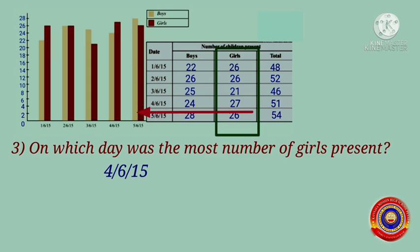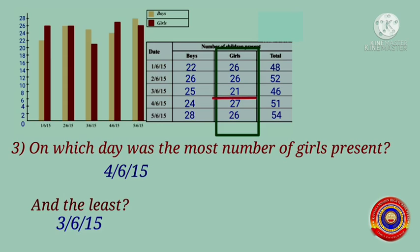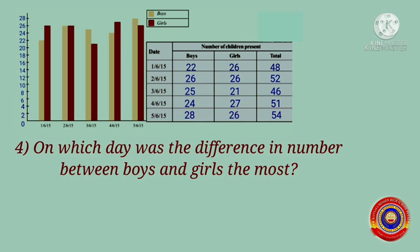And the least — we have to find out on which day was the least number of girls present. Yes, it was on 3rd June 2015, and the number of girls present on that day is equal to 21.